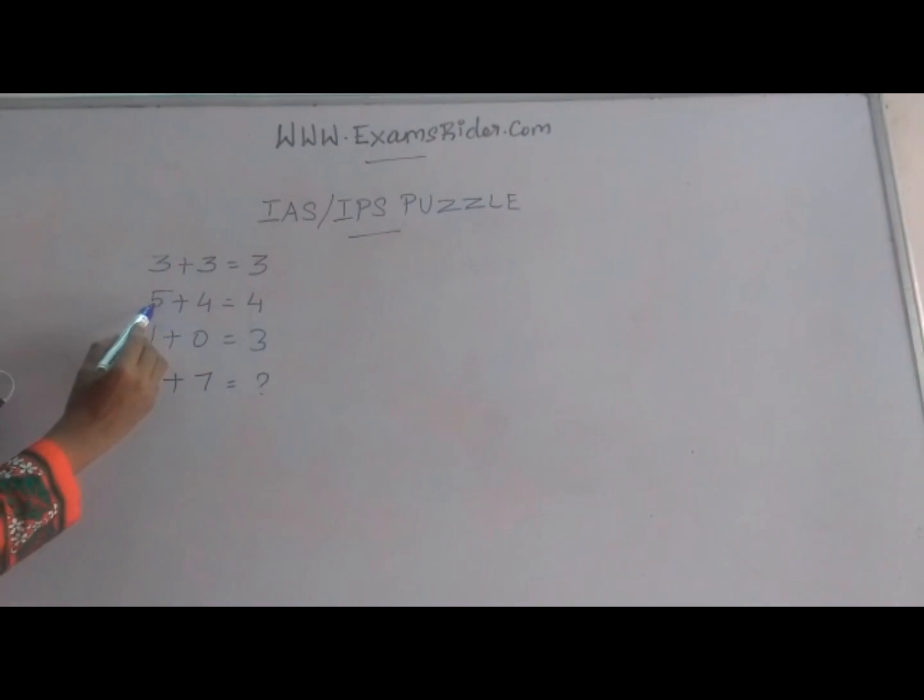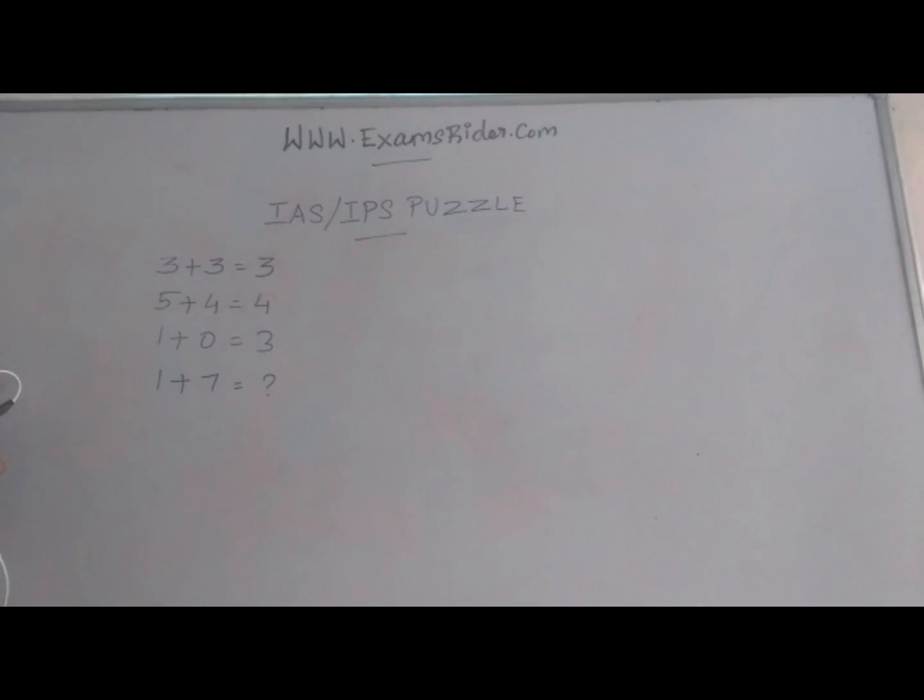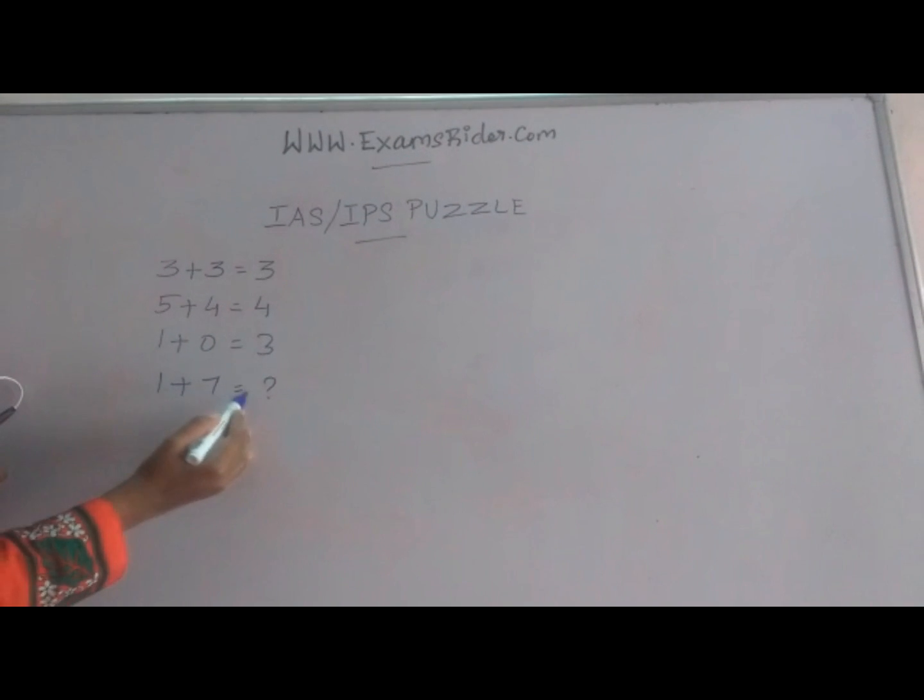3 plus 3 is equal to 3. 5 plus 4 is equal to 4. 1 plus 0 is equal to 3. Now we find the 1 plus 7 is equal to what?